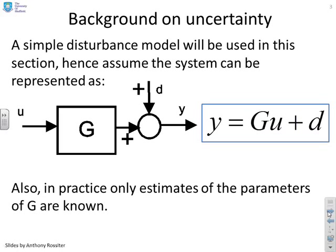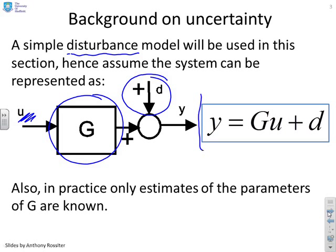What causes our predictions to go wrong is clearly uncertainty. We're going to deal mainly with disturbances, but implicitly we're also dealing with parameter uncertainty. Assume you have a system G with an input U, subject to some output disturbance D. Then the overall output is given by Y equals GU plus D — not just GU. That's what we're going to look at: how does our modelling and prediction get affected by this scenario?